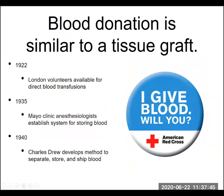Blood donation is similar to a tissue graft — and it is a tissue graft. This is a process only about 100 years old, starting in England in 1922 with direct blood transfusions. In the 1930s, the Mayo Clinic established a way for storing blood so it could be collected, kept for a while, and then given to a recipient. In 1940, Charles Drew developed a method to separate, store, and ship blood, getting us to the point where the American Red Cross can now hold blood drives, collect large quantities, store it, and ship it where needed.